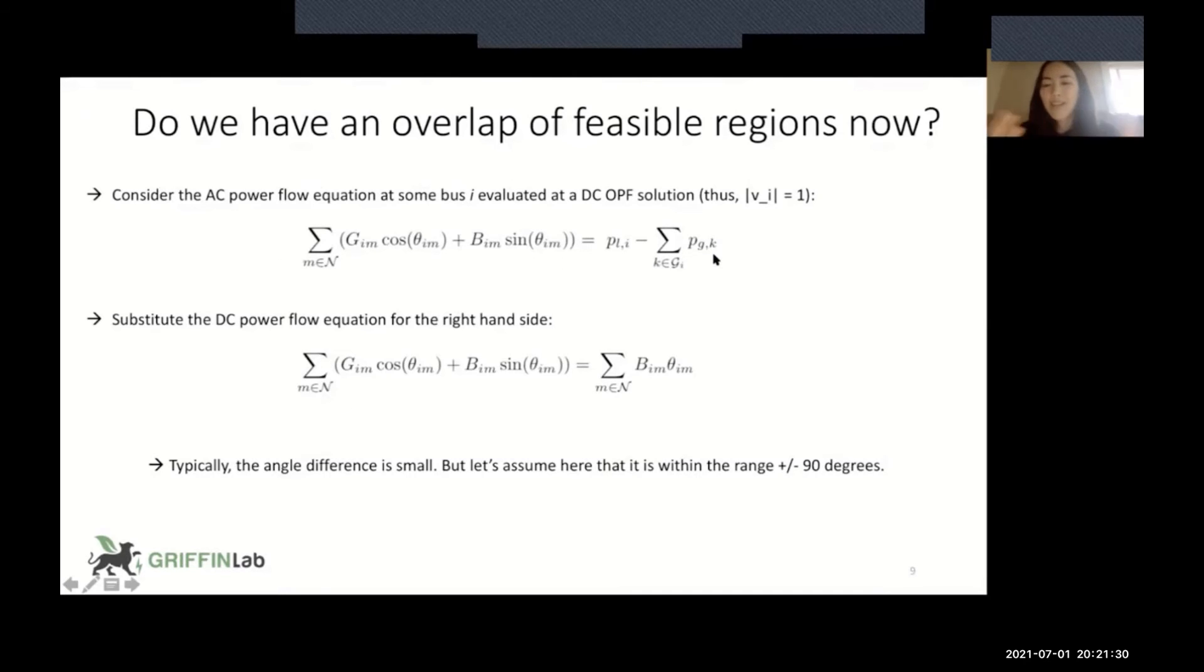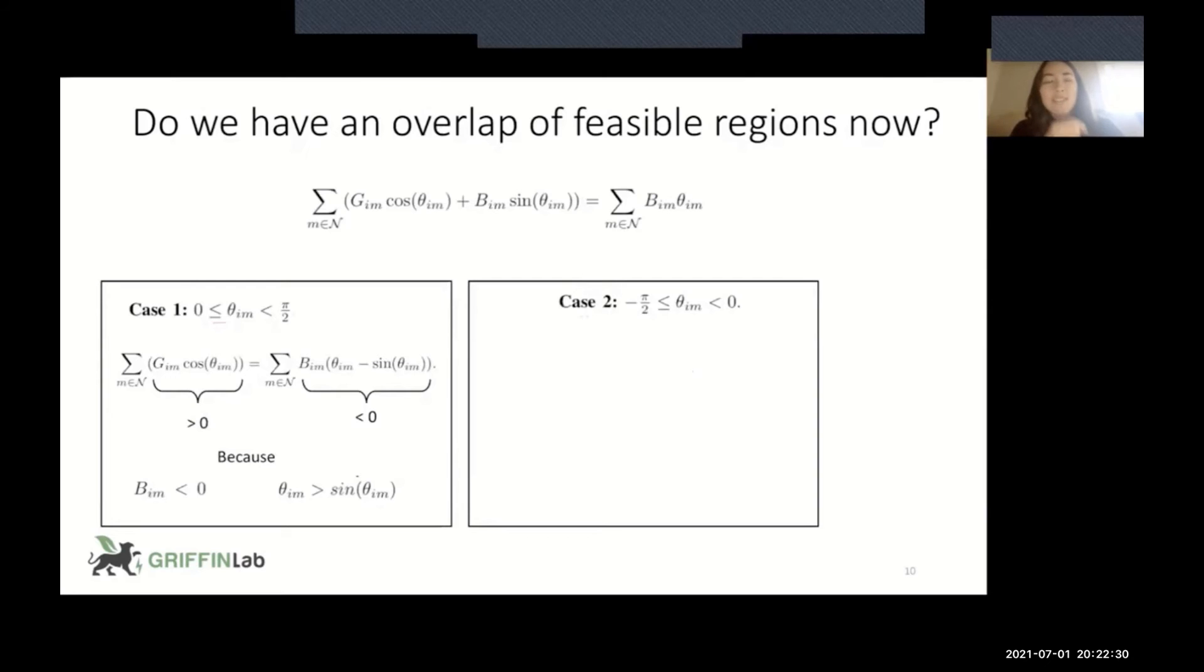Okay, so here is the ACOPF, AC power flow equation, at some bus I, evaluated at the DCOPF solution, meaning the voltage magnitudes are assumed to be one. So we have basically the normal AC power flow equation, except now we plugged in the voltage magnitudes that DCOPF assumes. Now, this right-hand side, if we're comparing and assuming, so the assumption here is that ACOPF and DCOPF are producing the same solution, let's substitute the DCOPF power flow equations on the right-hand side, because this is equal to this. So if this left-hand side is equal to this right-hand side, then this left-hand side should be equal to this right-hand side. So typically, this angle difference is small, DCOPF does assume it's small, but in this case, let's just assume a big range, let's make a less strict assumption that theta is somewhere between plus negative 90 degrees and positive 90 degrees, so big angle difference.